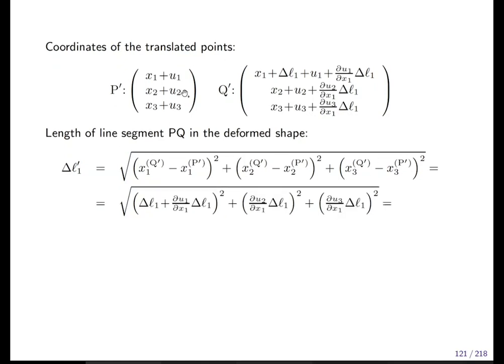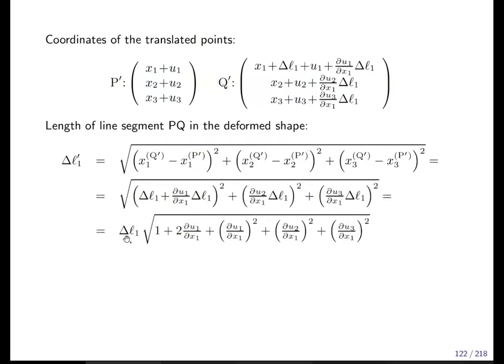You can get from the P prime Q prime definition, you can insert everything here. Then you get something which is proportional to Δl₁ squared. All the terms contain Δl₁; we can take it out of the square root, and what remains are partial derivatives.